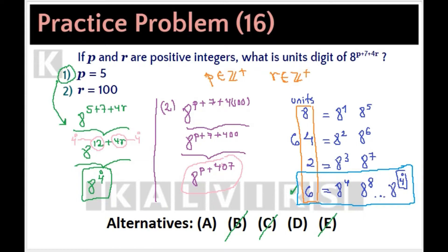Everything depends on the value of P, but we don't know the value of P. Therefore, statement 2 alone is not sufficient. Alternative D is eliminated. Choice A is correct.